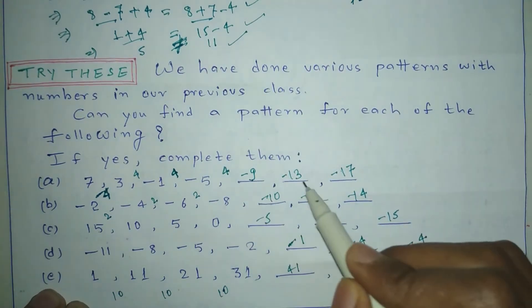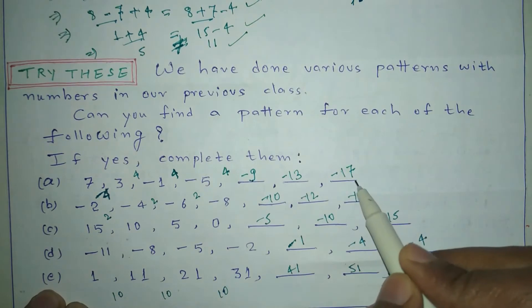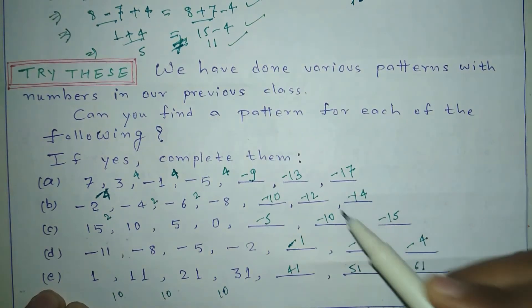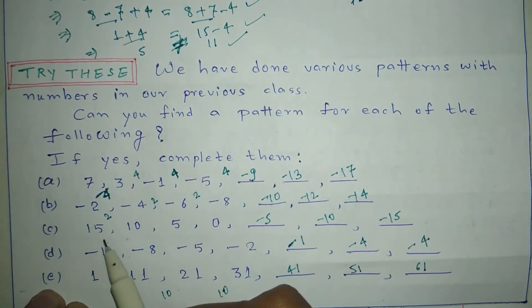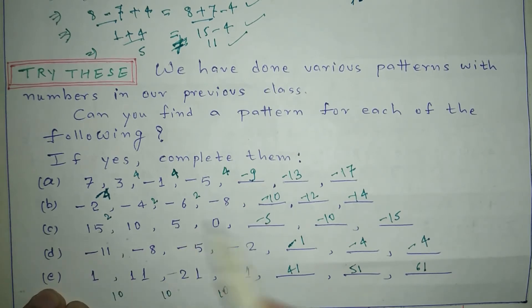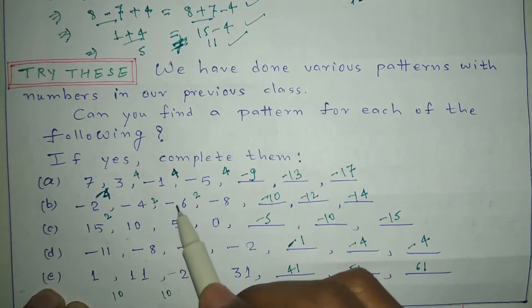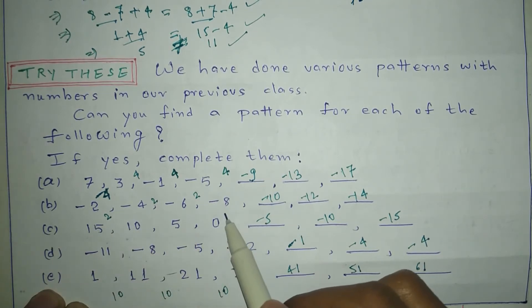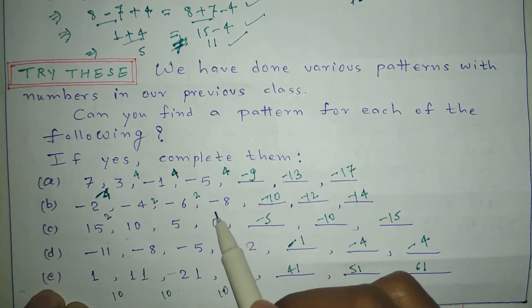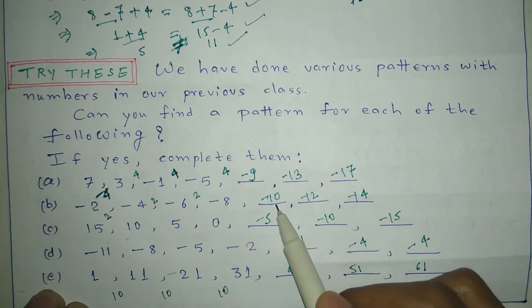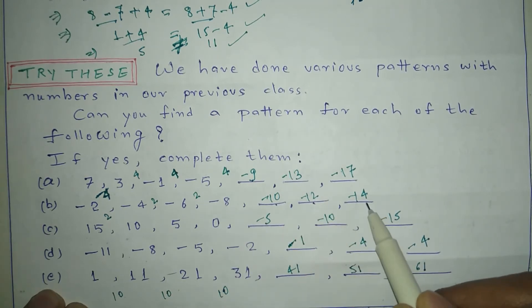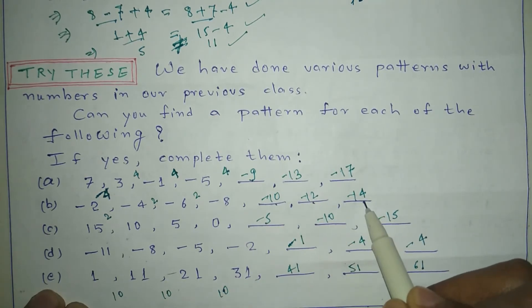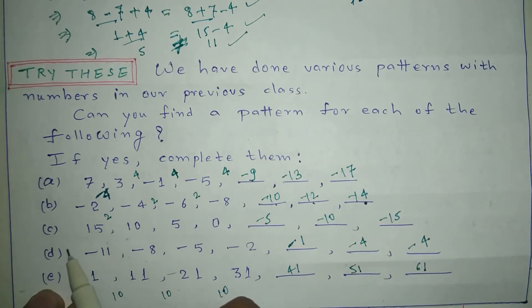Following the pattern of subtracting 4 each time, the next terms are minus 9, minus 13, and minus 17. In question B, the series is minus 2, minus 4, minus 6, minus 8. We can see that 2 is being subtracted continuously, so the next terms are minus 10, minus 12, and minus 14.